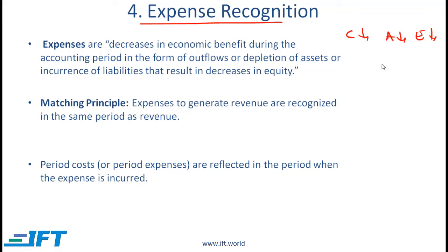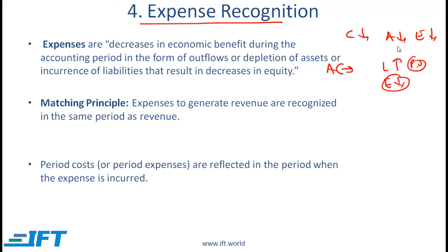Another situation is where your liability goes up. So if the asset stays the same and the liability goes up — let's take an example. Let's say that your pension obligation is a liability. Over a given period, if the pension obligation is going up, that means your liability is going up. If the asset stays the same, that means equity must be going down. So simplistically, decreases in assets are expenses and increases in liabilities are expenses, because both of these items tend to decrease equity.